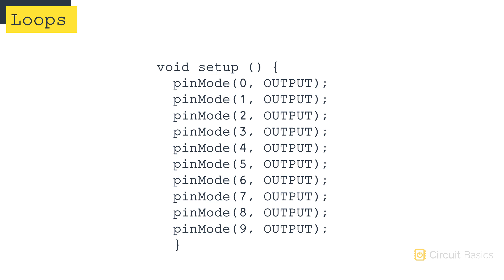Say you want to initialize a bunch of pins as outputs. Instead of doing this, where each pin is initialized separately, you could use a for loop to initialize each pin.